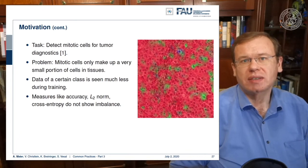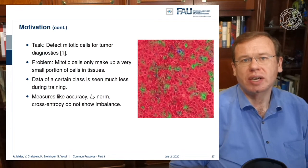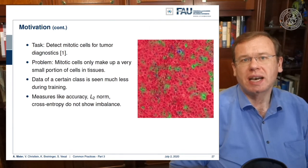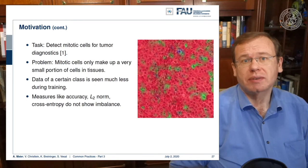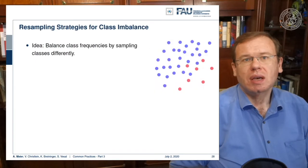But you have to detect them correctly. Mitotic cells make up only a very small portion of cells in tissues, so the data of this class has been seen much less during training. Measures like accuracy, L2 norm, and cross entropy don't reflect this imbalance — they are not very responsive to it.